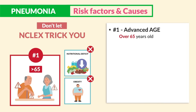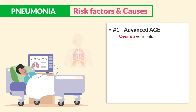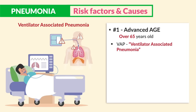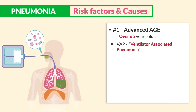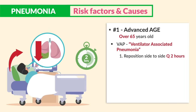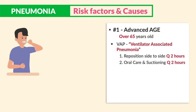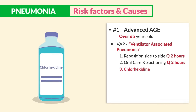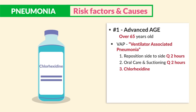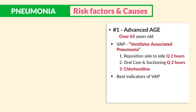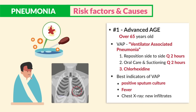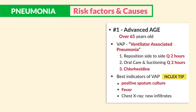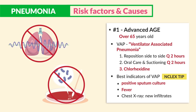Another highly tested cause: clients on ventilators who get VAP — ventilator-associated pneumonia. This happens when secretions in the mouth and throat containing bacteria cause pneumonia. It's critical to: number one, reposition the client side to side every two hours to mobilize secretions; number two, perform oral care and suctioning every two hours with chlorhexidine. These are always on select-all-that-apply questions for VAP. The best indicators for VAP are positive sputum culture, fever, and chest x-ray with new infiltrates — not lung sounds or blood cultures.